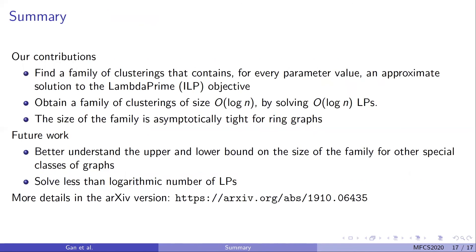To summarize, our contribution in this work is we find a family of clusterings that contains for every parameter value an approximate solution to the objective. We obtain a family of clustering of size big O of log n by solving big O of log n LPs. The size of the family is asymptotically tight for ring graphs. In the future, we would like to better understand the upper and lower bound on the size of the family for other special classes of graphs and solve probably less than logarithmic number of LPs. Because remember, our FE algorithm, although it returns potentially a smaller 1 plus epsilon approximating family, still requires solving a log number of LPs at worst case. More details of this work can be found in our archive version if you go through this link or go to our document in the proceedings. Thank you all for tuning in. This is my presentation.